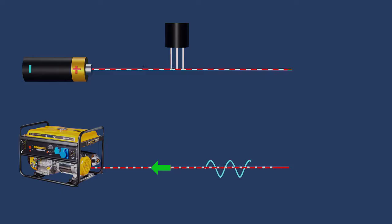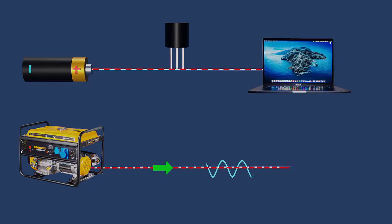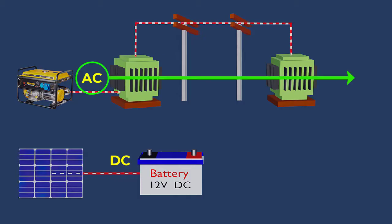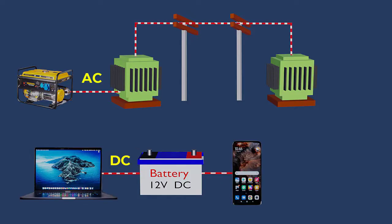This need for stability explains why DC, with its stable voltage, is the preferred choice for powering most electronic devices. The choice between AC and DC depends on the specific application. AC is more efficient for transmission over long distances, while DC is more suitable for storing energy and powering sensitive electronic devices.